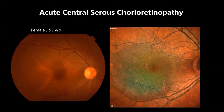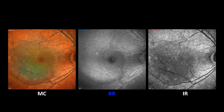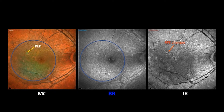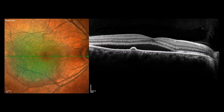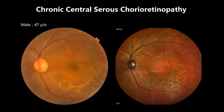This is a patient with acute central serous chorioretinopathy. Multicolor image demonstrates a green area which corresponds to the area of subretinal fluid. Color fundus photo does not show subretinal fluid well. PED showed up on multicolor as well as blue reflectance. Infrared reflectance reveals RPE changes. OCT shows subretinal fluid and PED.